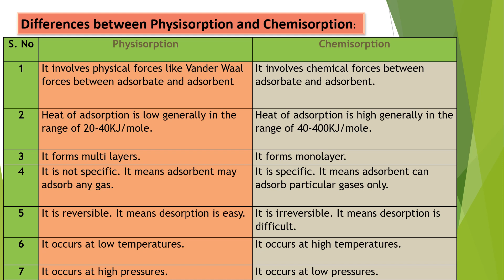The third difference: physisorption forms multilayers on the surface of the adsorbent because of the weak forces existing between adsorbate and adsorbent. In chemisorption, it can form only one layer — a monolayer — because the forces are strong chemical forces. The fourth difference: physisorption is not specific, meaning the adsorbent can adsorb any gas, whereas chemisorption is specific, meaning the adsorbent can adsorb specific gases only.